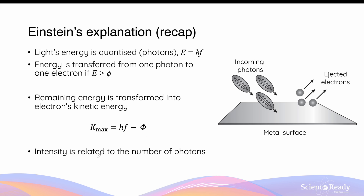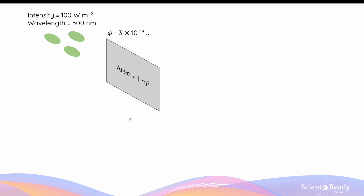Einstein's model also proposes that the intensity of light, which will be the focus of this video, is related to the number of photons. However, what I hope you will understand by the end of this video is that although the number of photons will dictate the intensity of light, having a constant intensity does not mean that the number of photons is unchanged. I want to demonstrate this concept by going through a simple scenario.